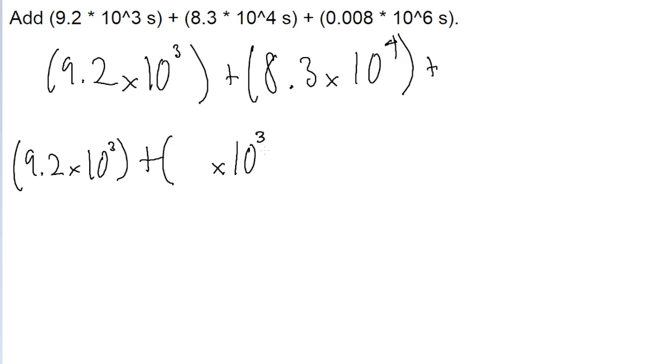And so if we're making the exponent smaller, then we have to make the coefficient bigger. So if we're lowering the power of 10 by 1, then we need to increase the coefficient by a power of 10, by moving the decimal point one space to the right. So that becomes 83 times 10 to the power of 3.